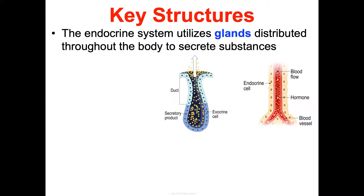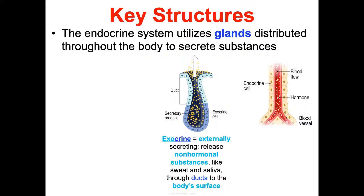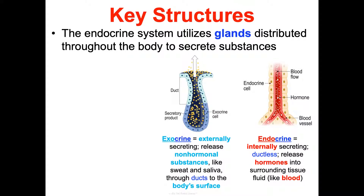The endocrine system utilizes glands distributed throughout your body. There are two types: exocrine glands are externally secreting — they release non-hormonal substances like sweat, saliva, or tears through ducts to your body surface. Endocrine glands, which we focus on in this concept, are internally secreting and ductless — they release hormones directly into surrounding tissue fluid like blood.